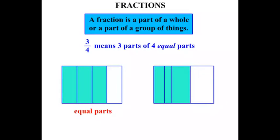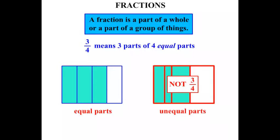What about this diagram? Well there's 3 parts that are shaded out of 4, but there's a problem. Let's see why. 1, 2, 3, 4. There are 4 parts there but they're not equal. So it's not 3 quarters. The reason being because we're dealing with unequal parts.